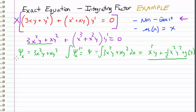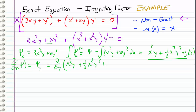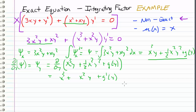Now we're going to take this result and differentiate it with respect to y to get an expression for psi sub y. Differentiating with respect to y gives us x cubed plus x squared y plus g prime of y. This is an expression for psi sub y, and we also have an expression for psi sub y from our equation, which is x squared plus xy. Setting them equal and rearranging, g prime of y equals x squared plus xy minus x cubed minus x squared y.